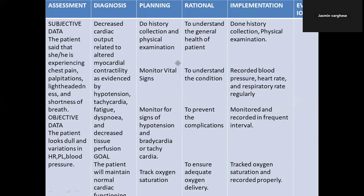Subjective data is what your patient says about their situation — the patient's complaints, what the patient reported, or what the patient is experiencing. Objective data is what you have observed from the conversation or the situation. Here, the subjective data: the patient said he or she is experiencing chest pain, palpitations, lightheadedness, and shortness of breath. Objective data: the patient looks very dull and tired, with variations in heart rate, pulse rate, and blood pressure. In the diagnosis column, write: decreased cardiac output related to altered myocardial contractility, as evidenced by hypertension, tachycardia, fatigue, dyspnea, and decreased tissue perfusion.